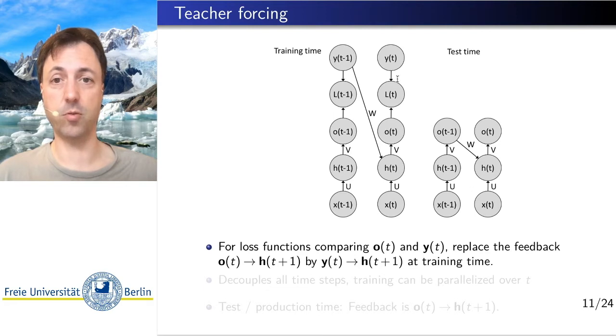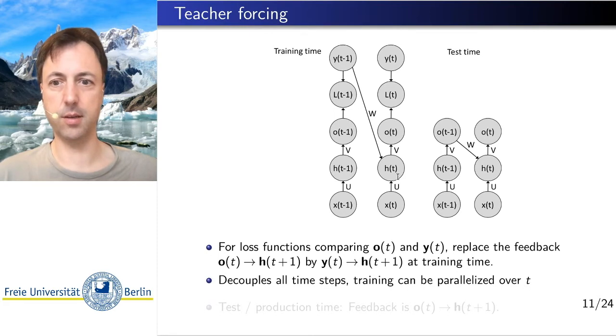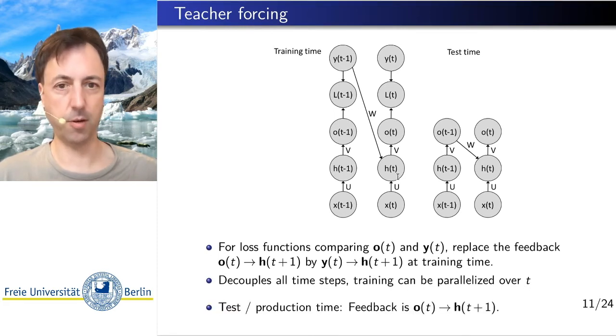Because here, if we just look at two time steps, t-1 and t, what we can do now, instead of feeding O of t-1 to H of t, we know the reference value of O of t-1 in the supervised learning case. We have this label, y t-1. That is actually an input that is given. So we can just essentially rewire this time feedback from O of t-1 to y t-1, feeding into H of t, and use that at training time. So at training time, now, we can decouple all the time steps and parallelize over t.